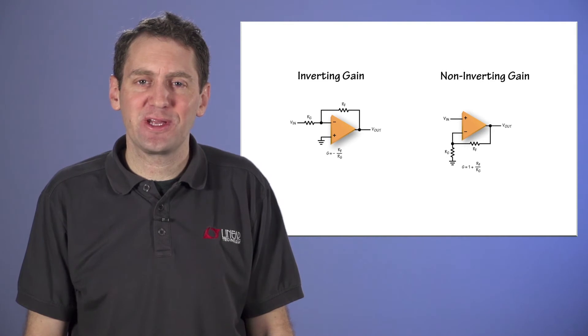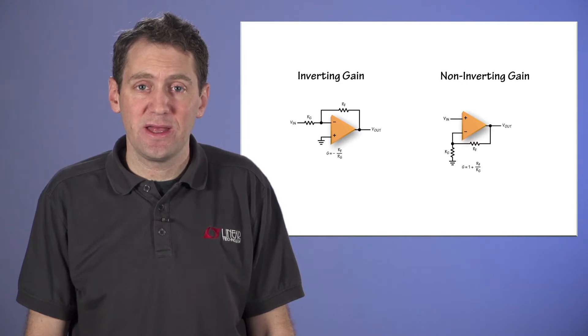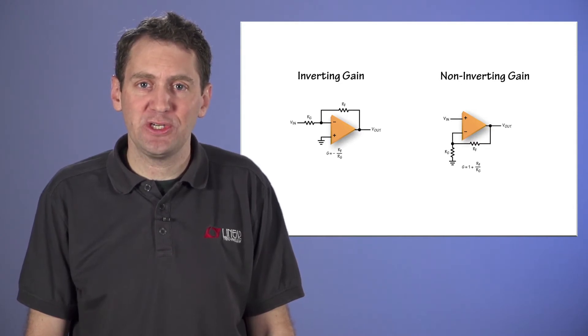Some systems try to correct for gain error by doing a calibration. That works, but now you have to worry about how the resistor ratio will change with temperature. If you put all the resistors on the same die, they will also track extremely well with temperature. We have achieved gain error temperature drift of less than 1 part per million per degree C.